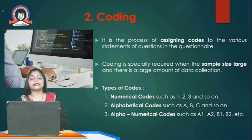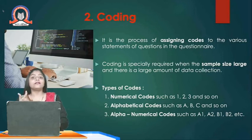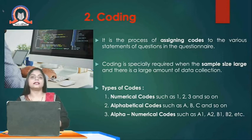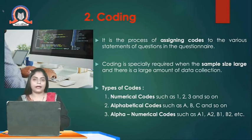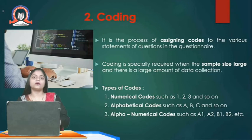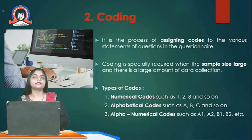Like students get roll numbers in colleges or schools, or vehicles get vehicle numbers — these are examples of alphanumeric coding. The PAN card number is a best example of alphanumerics. The Aadhaar card number, which every person has, is a best example of numeric coding. Even the government does coding. When data is too large and difficult for analysis, researchers convert it into codes — numbers, alphabets, or alphanumerics. That's the second step.